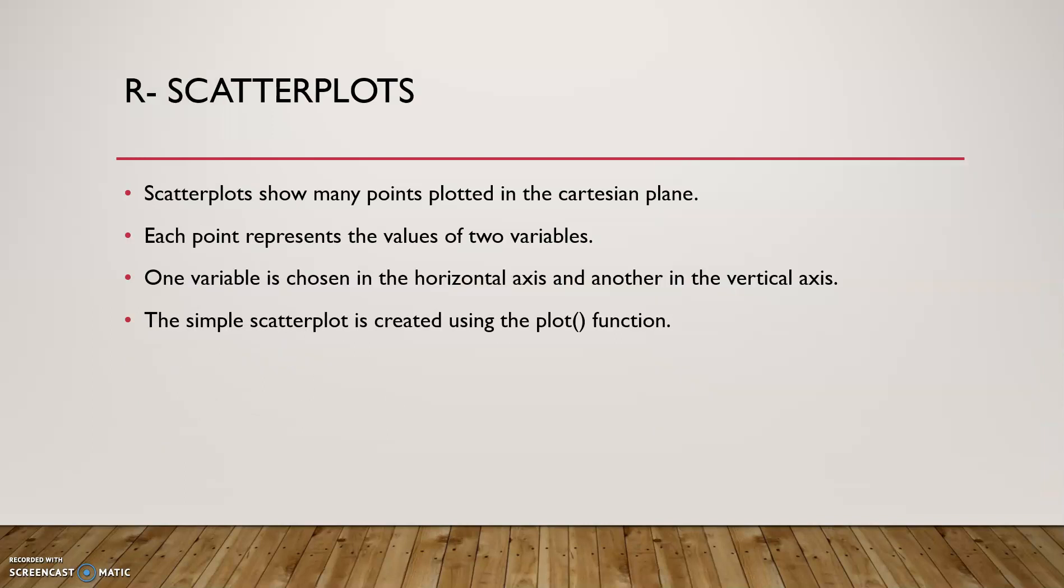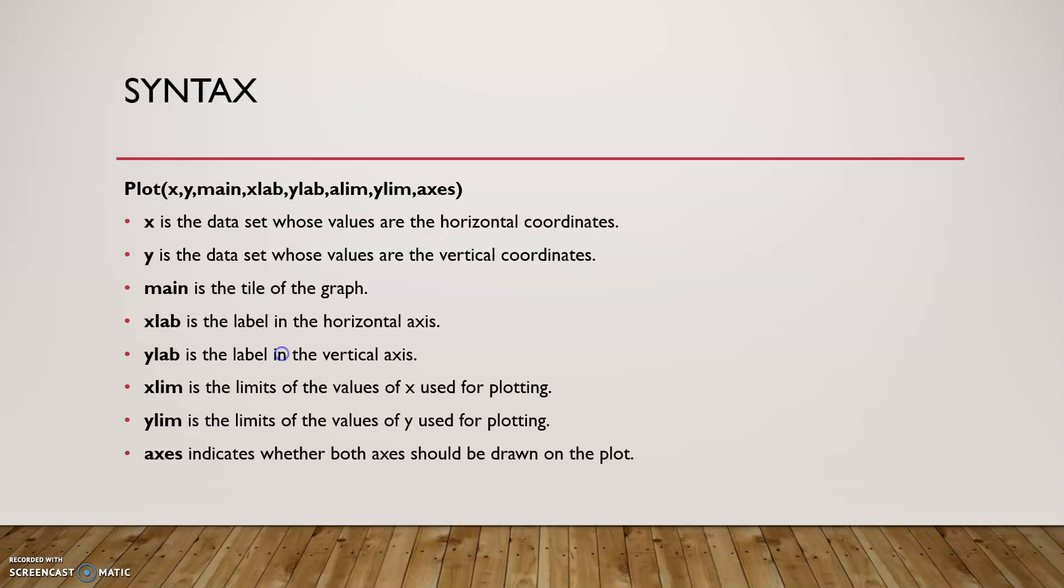Scatter plot. Scatter plots show many points plotted in the Cartesian plane. Each point represents the values of two variables. One variable is chosen in the horizontal axis and another is the vertical axis. The simple scatter plot is created using the plot function. plot of x and y is the horizontal and vertical coordinates value. main is the title of the graph. xlab and ylab are the labels in the horizontal and vertical axis.